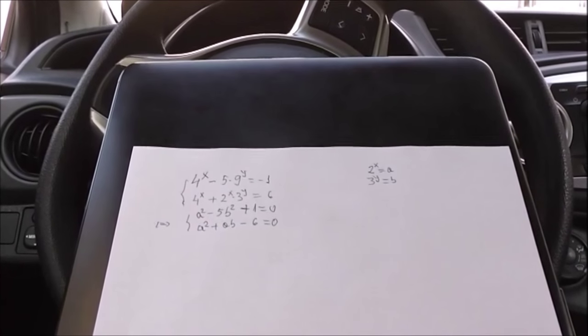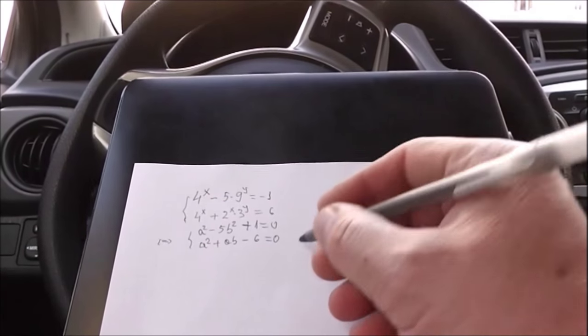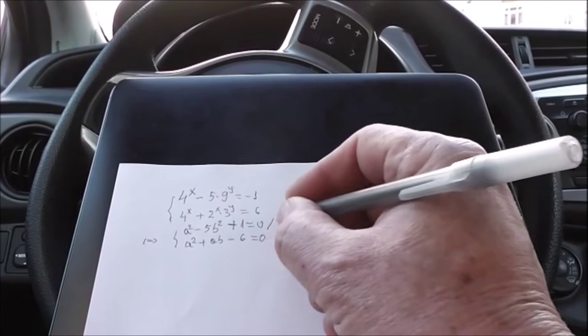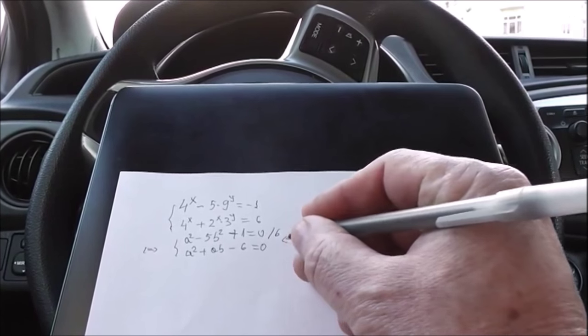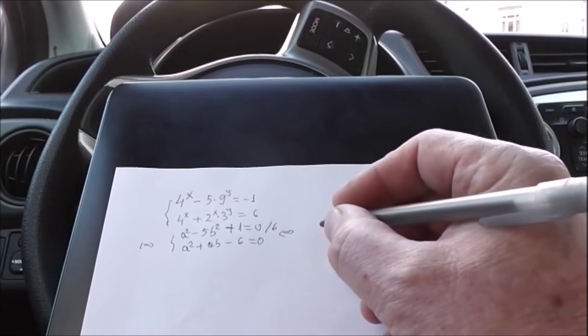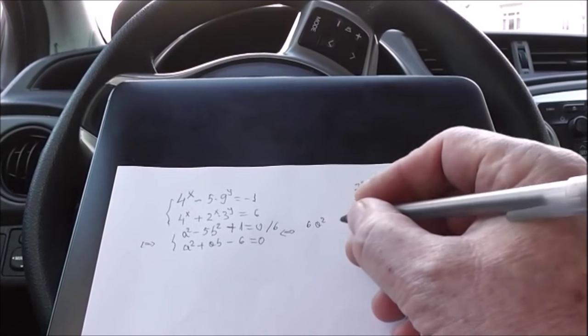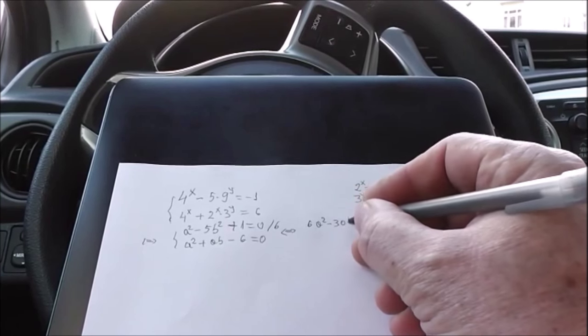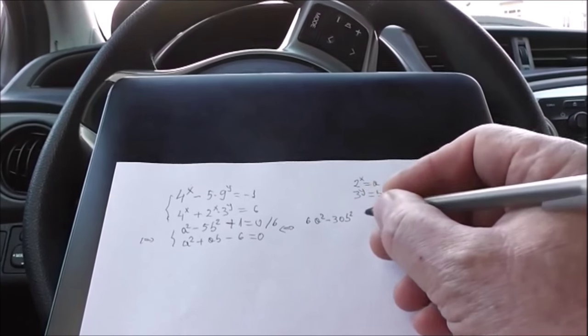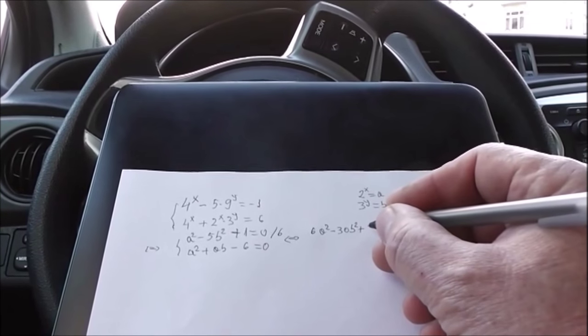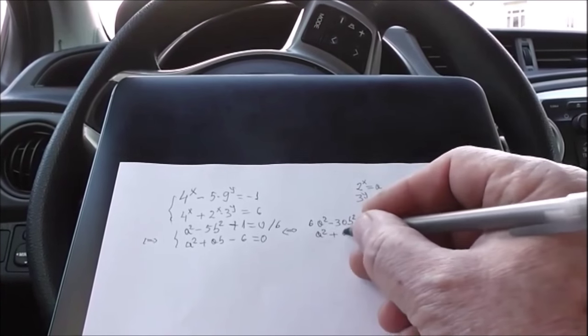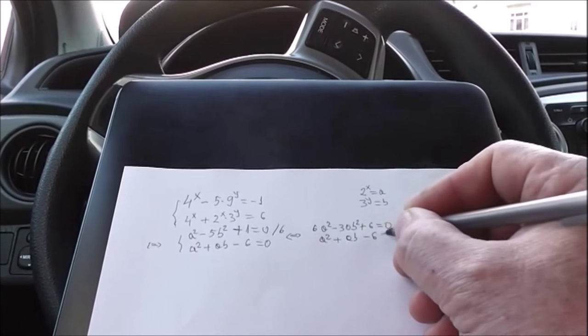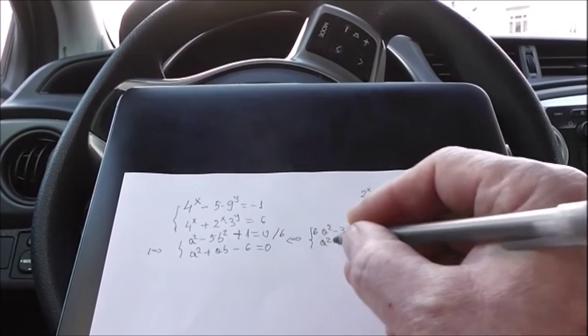What type of system do you recognize here? If we multiply the first one with 6 we can add them up and the 6s cancel. And we will have a new equation. Yes, we have to multiply the first one with 6 and we will have 6a² minus 30b² plus 6 equals 0. And the other one? a² plus ab minus 6 equals 0. Okay.